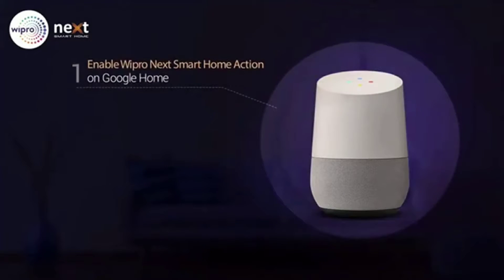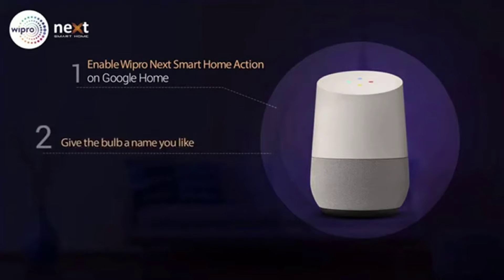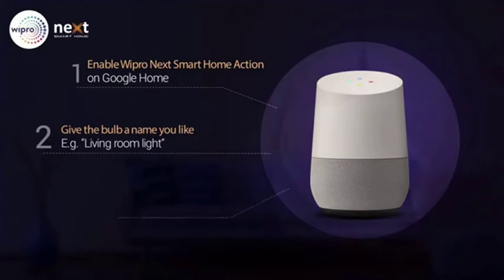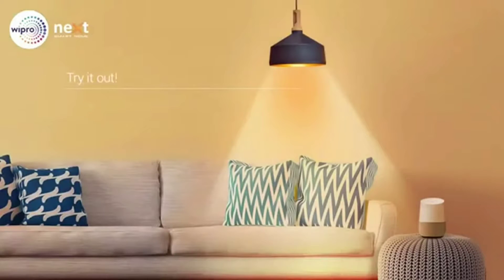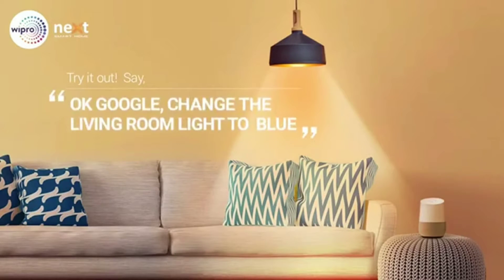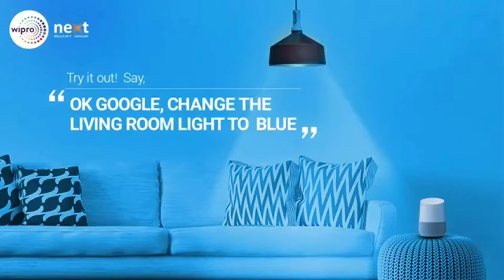1. Enable Wipro Next Smart Home action on Google Home. 2. Give the bulb a name you'd like, for example, Living Room Light. 3. Control your Wipro Smart LED with voice commands. Try it out — say, OK Google, change the living room light to blue.